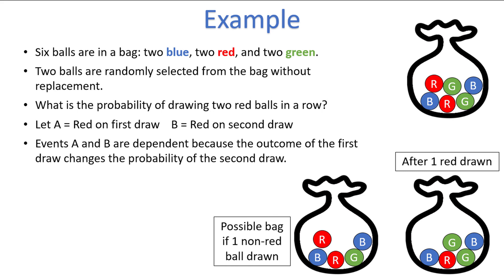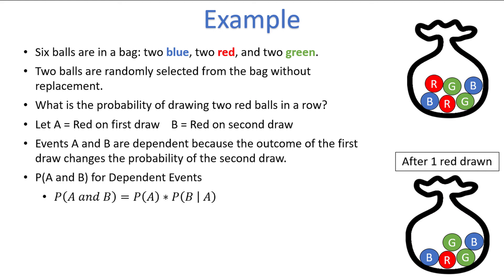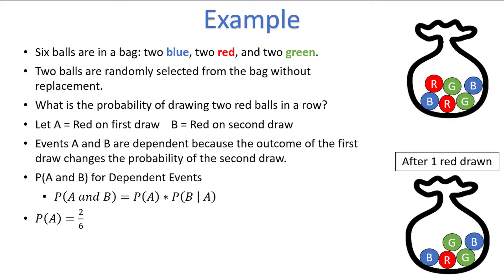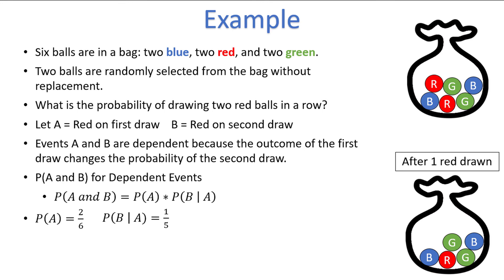Since the events are dependent, we must use the general joint probability formula for dependent events to find the probability of A and B. The probability of A and B — drawing a red and then a red again — is equal to the probability of A times the probability of B given A. The probability of A, drawing a red ball first, is two out of six. The probability of B given A, the probability of drawing a red ball given one red ball was already drawn, is one out of five — there is only one red ball left out of the five remaining balls. Therefore, the probability of A and B is two-sixths times one-fifth, which equals two out of thirty, or one out of fifteen. There is a one out of fifteen chance of drawing two red balls in a row.